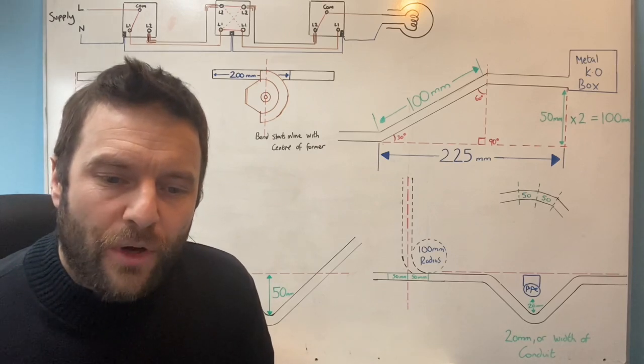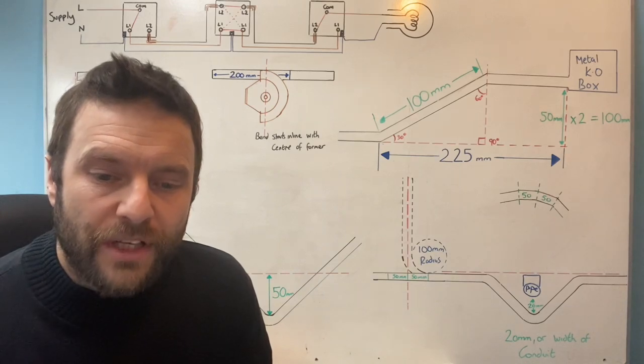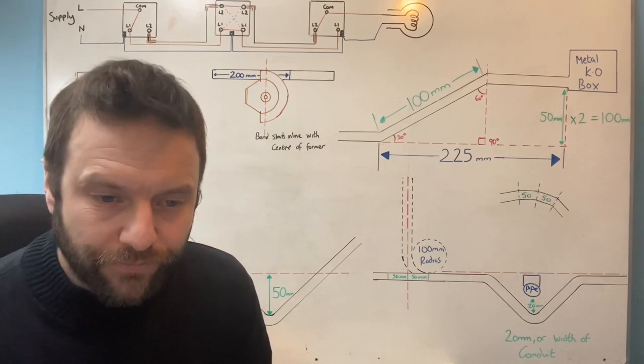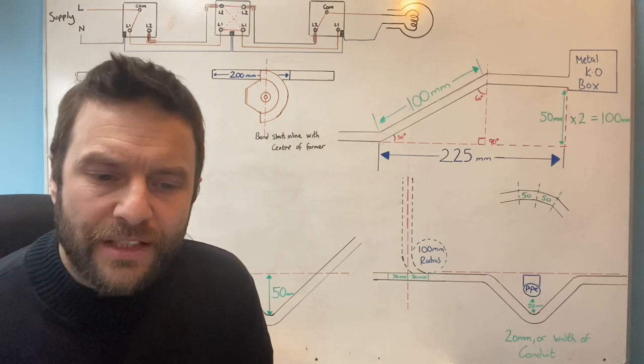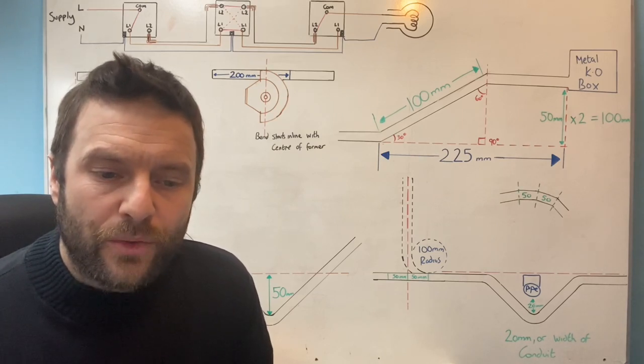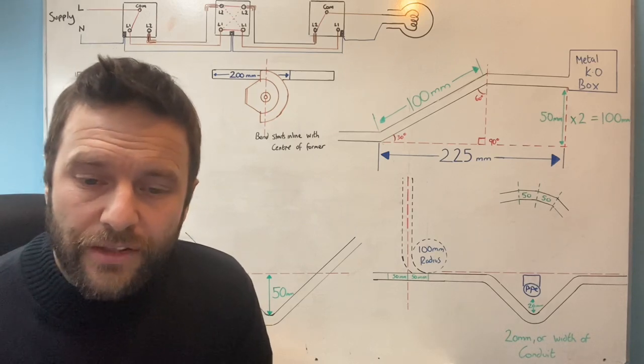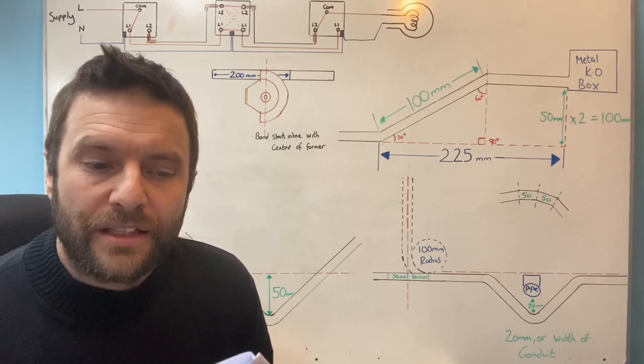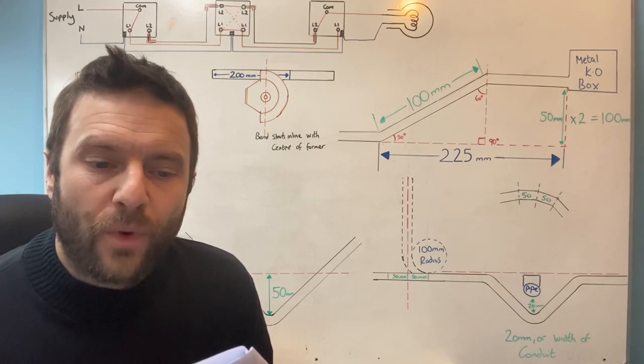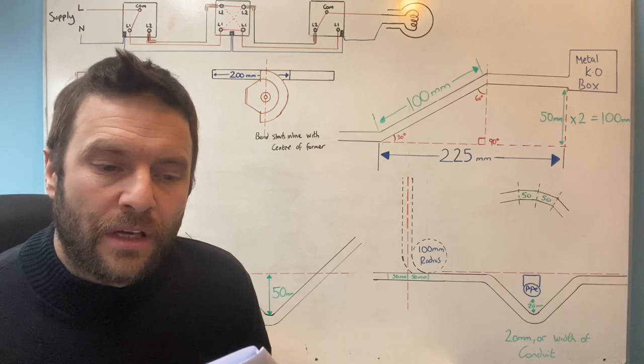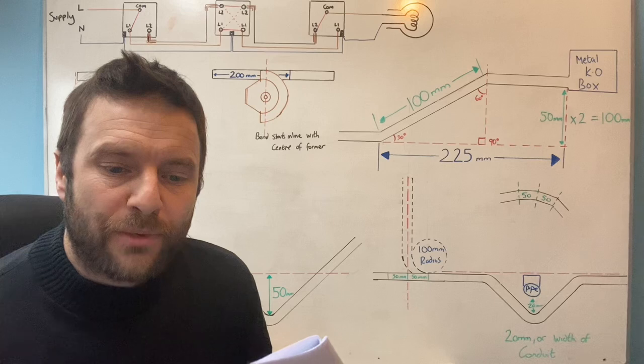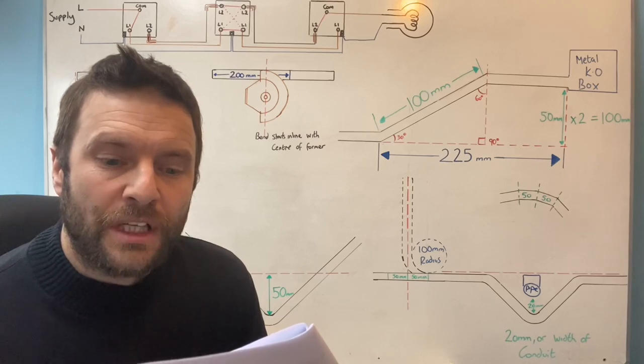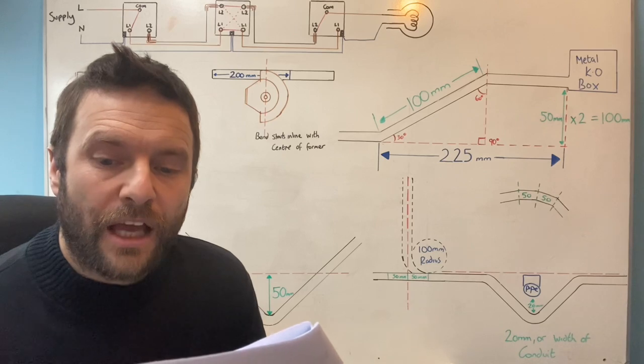To demonstrate occupational competence, you'll be required to apply industry working practices and procedures in keeping with relevant statutory and non-statutory regulations, for example BS 7671. You need to be able to interpret the drawings and diagrams, prepare, install, connect and terminate conductors and cables to industry standards. You must follow all the instructions given in the candidate's handbook and drawings.